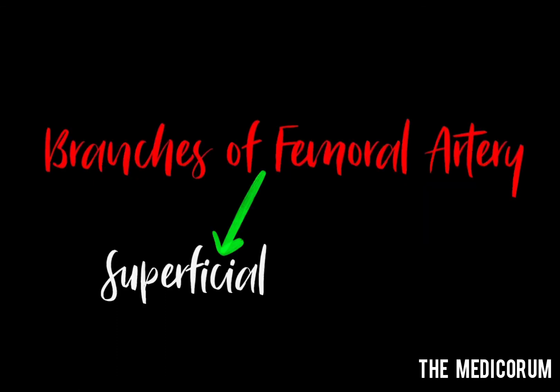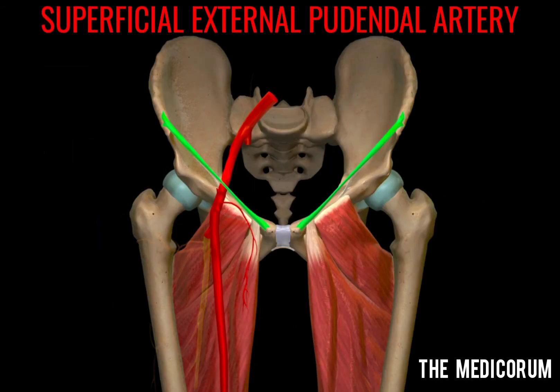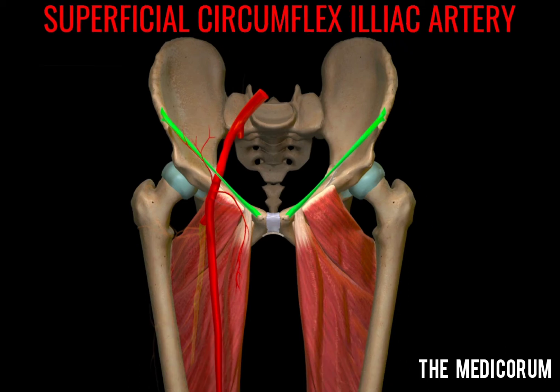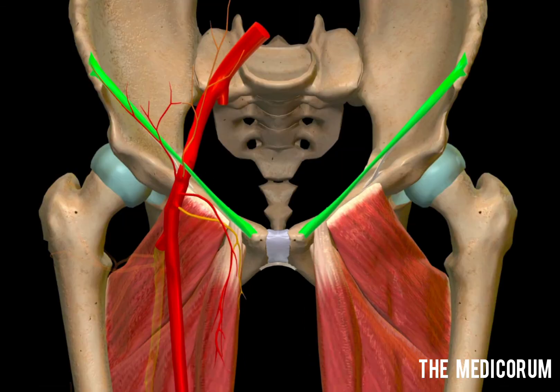The femoral artery gives superficial and deep branches. The superficial branches are: first, the superficial external pudendal artery, which supplies the skin of the external genital organ; second, the superficial circumflex iliac artery, which supplies the skin along the iliac crest; and third, the superficial epigastric artery, for the skin and fascia of the lower part of the anterior abdominal wall. This is how all three superficial branches look.